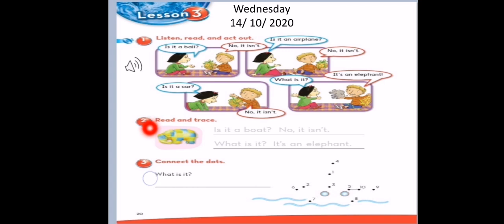Let's move to exercise number 2. Read and trace. You know how to read. You know how to trace. I will read. Is it a boat? No, it isn't. What is it? It's an elephant. I need you to trace.